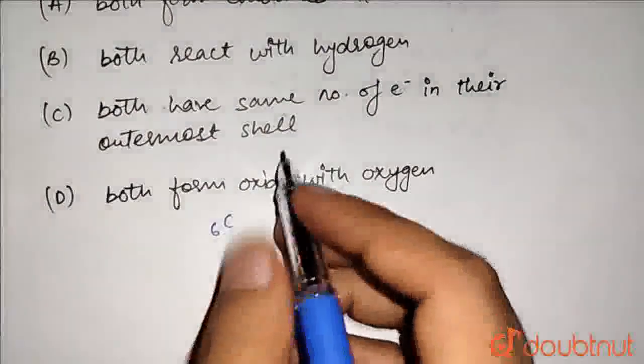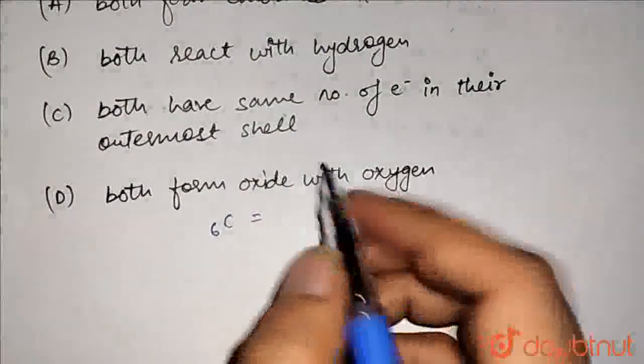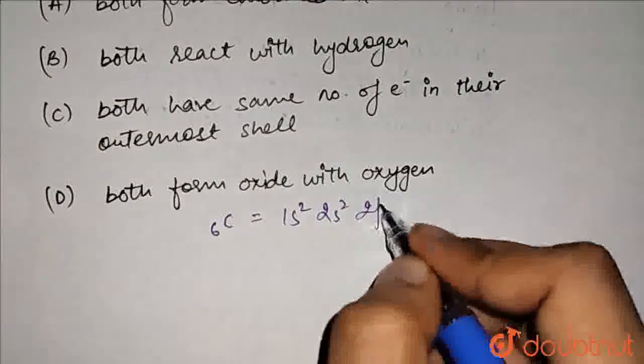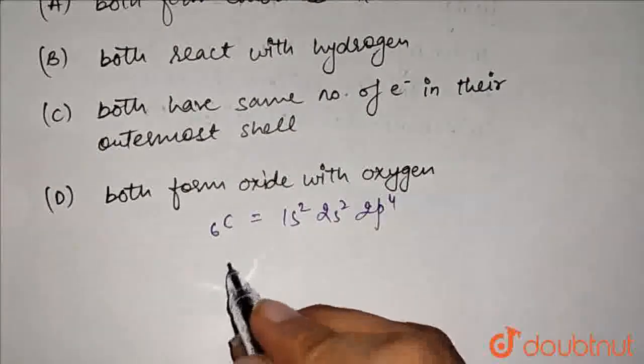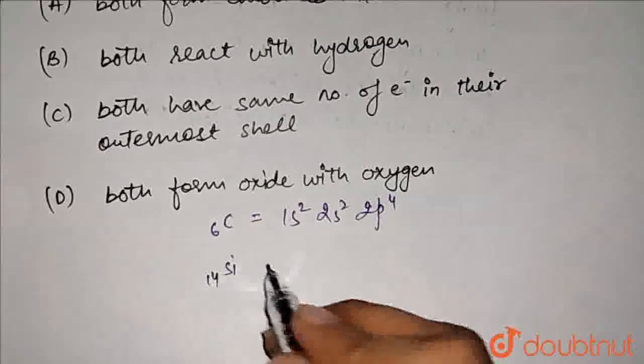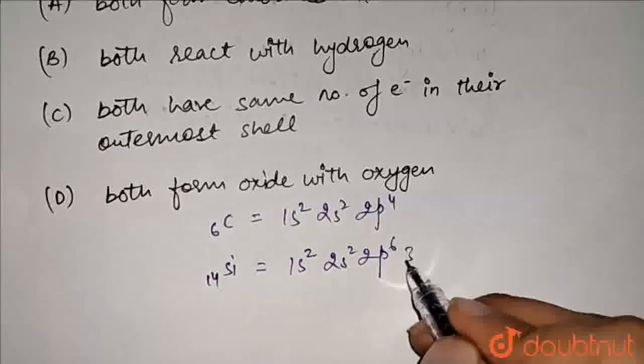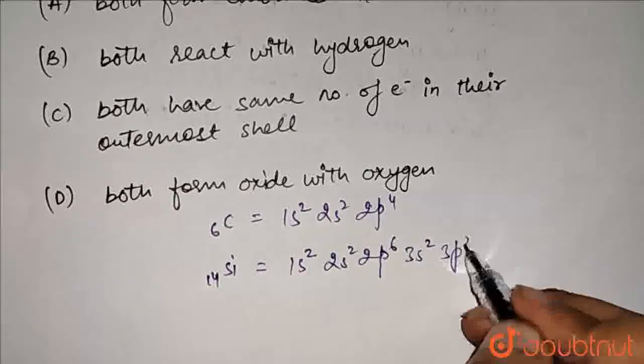So if we look at carbon atomic number, it's 6. And if we look at electronic configuration, it's 1s2, 2s2 and 2p4. And if we look at silicon atomic number, it's 14. And its electronic configuration: 1s2, 2s2, 2p6, 3s2 and 3p2.